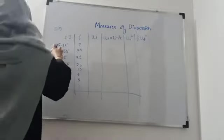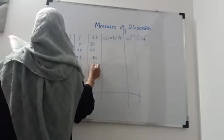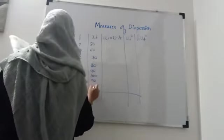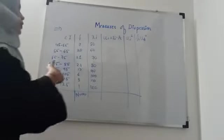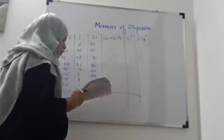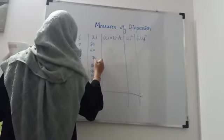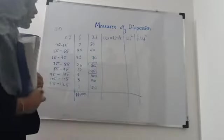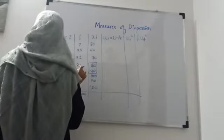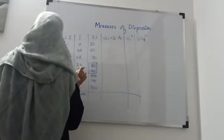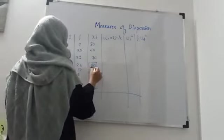N = sum of all frequencies = 100. There are 8 class intervals — an even number, so we look at the two middle classes (4th and 5th). The 4th class has midpoint 80 with frequency 23, and the 5th has midpoint 90 with frequency 13. Since 80 has the maximum frequency among the two middle classes, we consider A = 80.